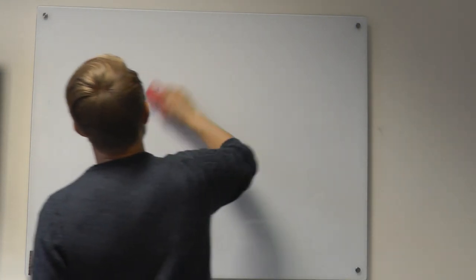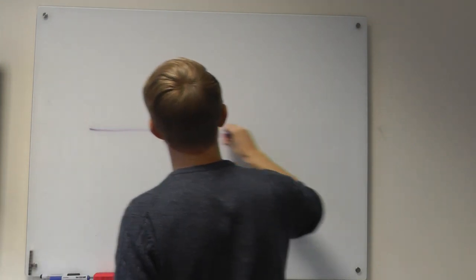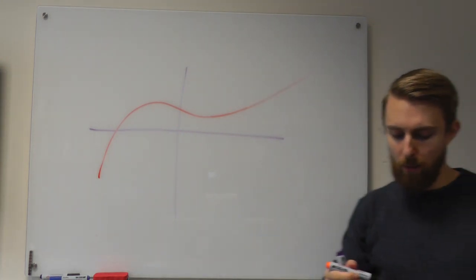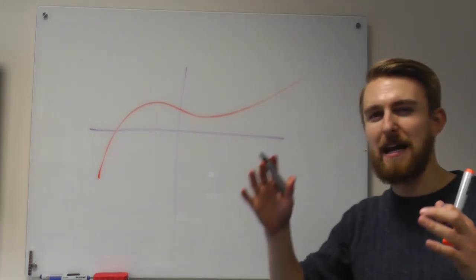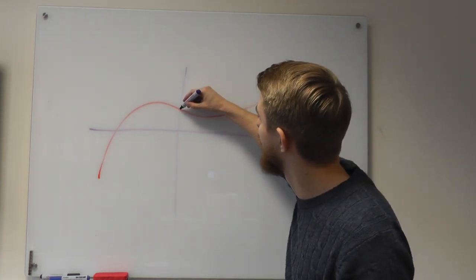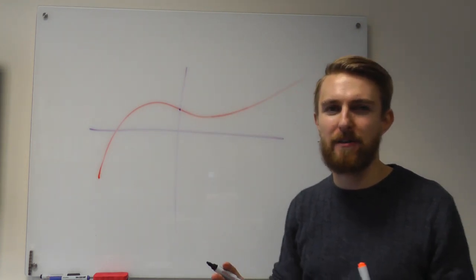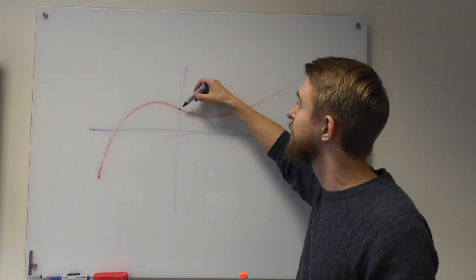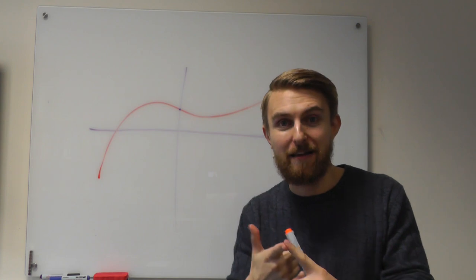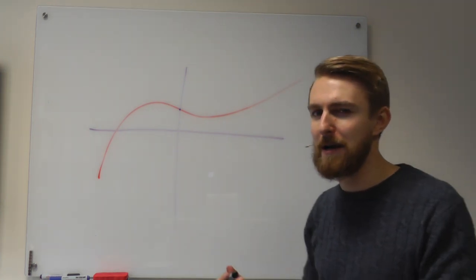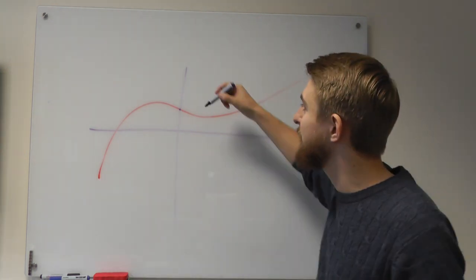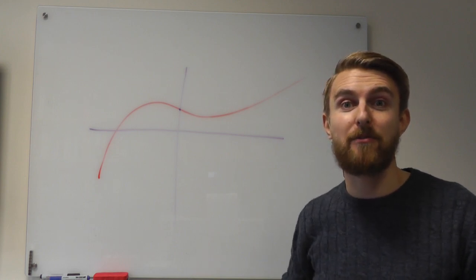If I draw a graph of an arbitrary function, what these power series can be used for is to say: if I know everything about the function at one point — its y-intercept, its gradient, its second differential, its third differential, and so on — if I know everything about it there, I can reconstruct all of the rest of the function. If I know everything about it here, I also know everything about it everywhere.